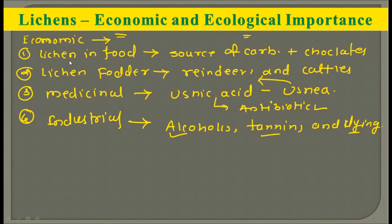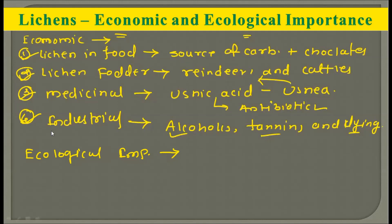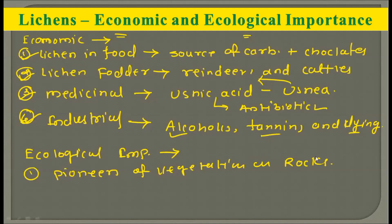These are the four economic importances of lichens: lichen as food, lichen as fodder, lichens with medicinal properties, and lichens used in industrial purposes. For ecological importance, the first point is that lichens are the pioneers of vegetation on rocks. As discussed in ecological succession, when there is a bare rock with no life, lichens are the first to settle down on these rocks, followed by the succession process which converts that rock into a whole new forest area.